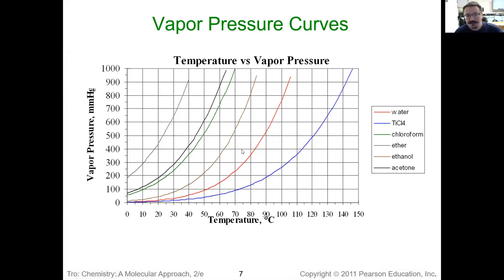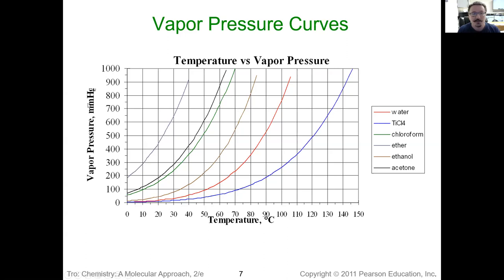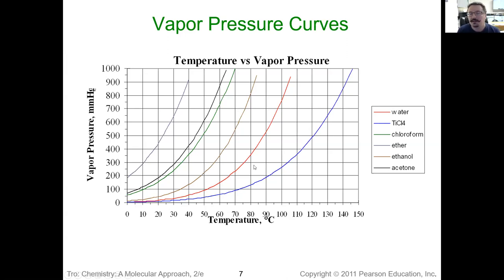We can plot this out. Scientists have taken a specific substance and recorded the vapor pressure over multiple different temperatures, and they'll get a vapor pressure curve. We have vapor pressure in millimeters of mercury on the y-axis — that's the same as torr — and temperature in Celsius on the bottom. Each one of these different colored curves represents a different substance, telling us at a specific temperature what the vapor pressure for that substance will be. You're not going to have to make any of these curves yourself, but you should know what they look like, what they tell you, and how to read one.